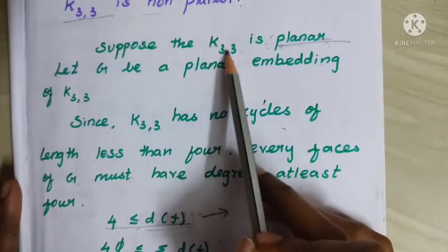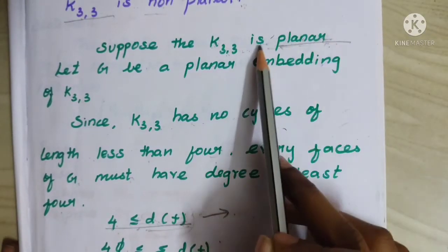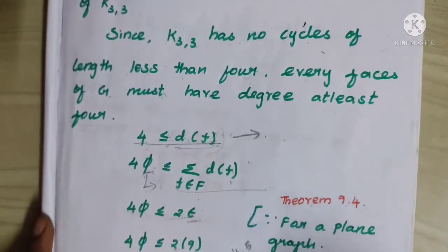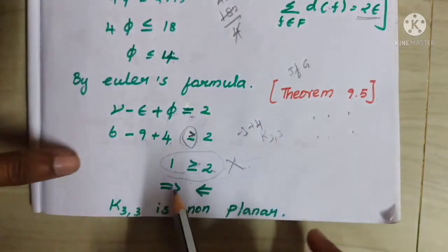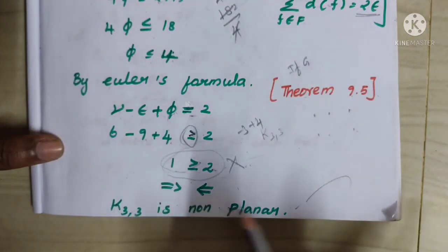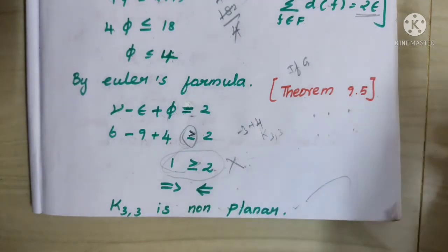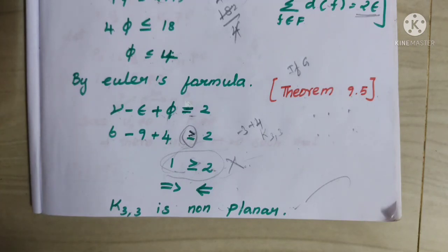That means our assumption that K3,3 is planar is wrong. Therefore, by contradiction, K3,3 is non-planar. I hope you understood that. Thanks for watching — keep supporting our channel Math Mentor Tamil. If you haven't subscribed, please do share and subscribe. Thank you so much guys.